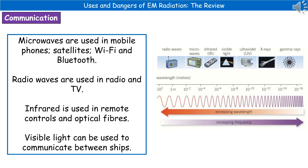We also use infrared in optic fibers to send information. The last type we'll use for communication is visible light — we can actually use visible light to send Morse code messages between ships.